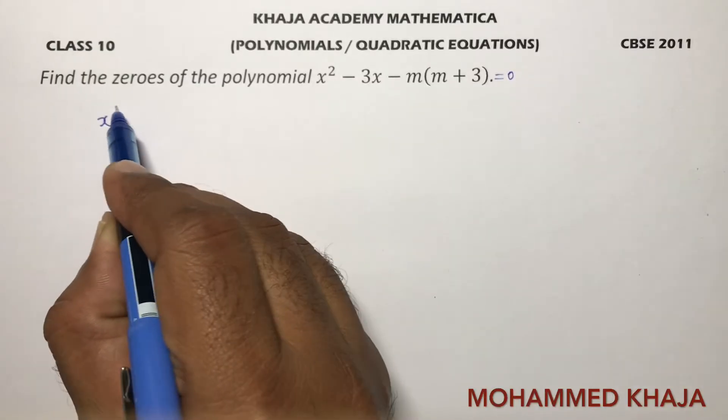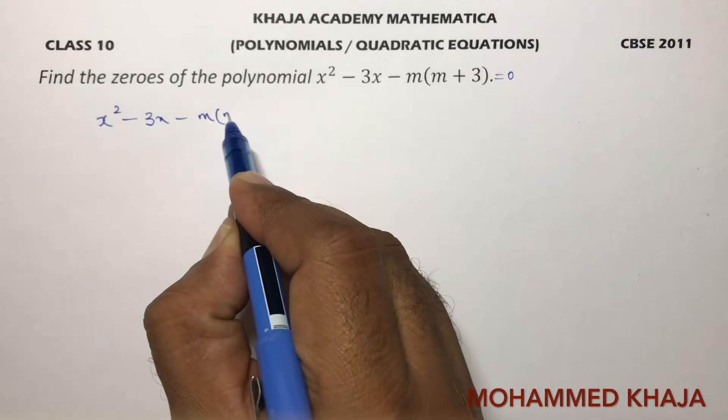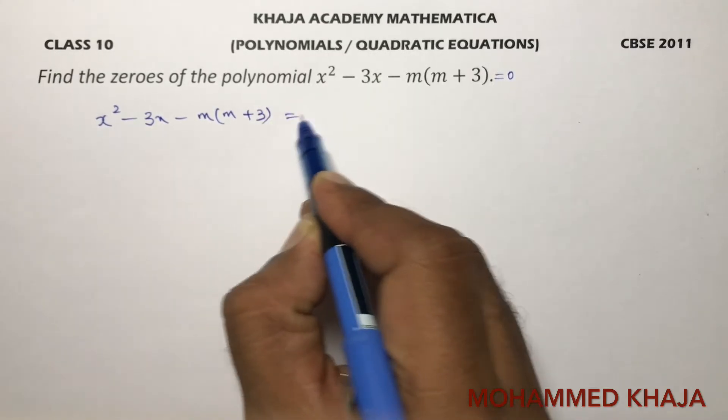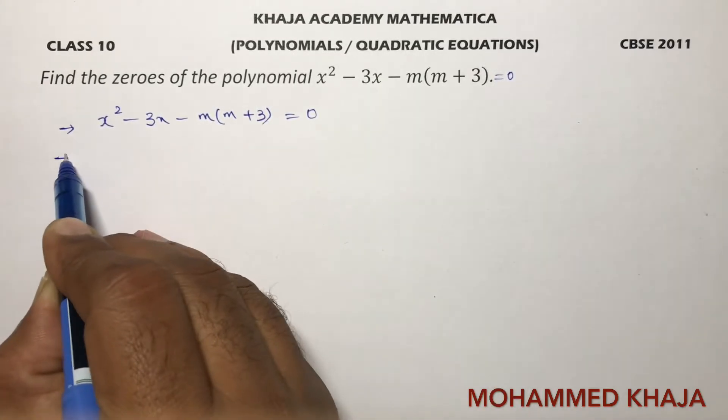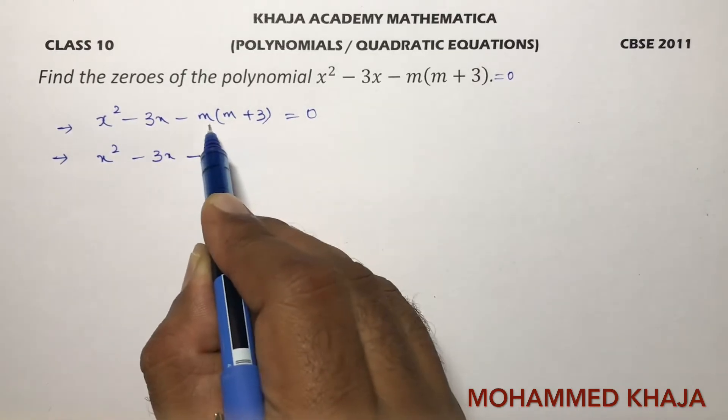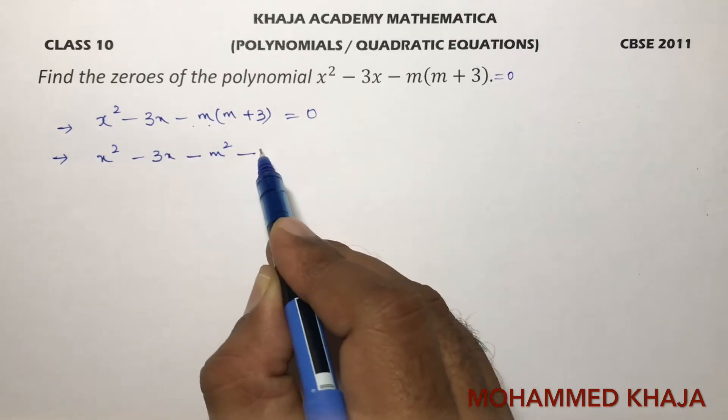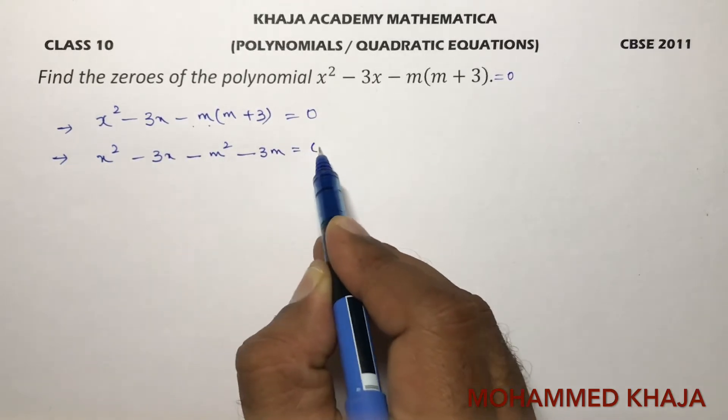x² - 3x - m(m + 3) = 0. First step: x² - 3x - m² - 3m = 0.